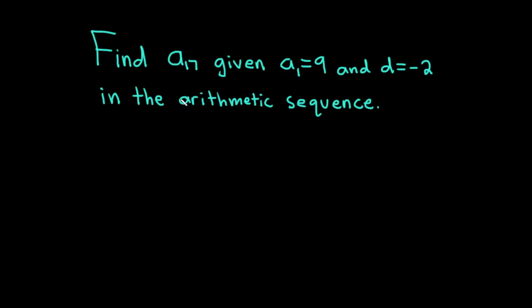In this video, we're going to do a problem involving arithmetic sequences. The question says to find the 17th term, which is a sub 17, given that the first term, a sub 1, is 9, and the common difference, which is d, is negative 2 in the arithmetic sequence.